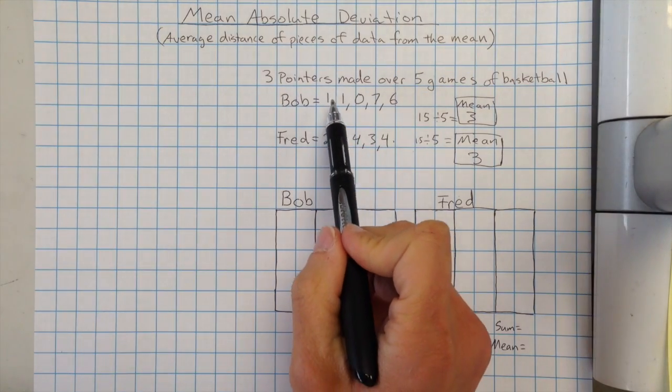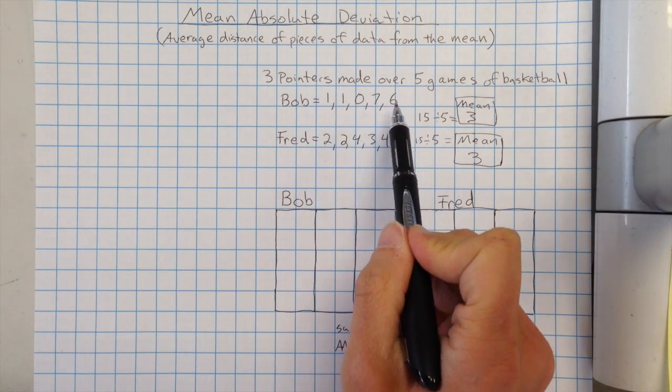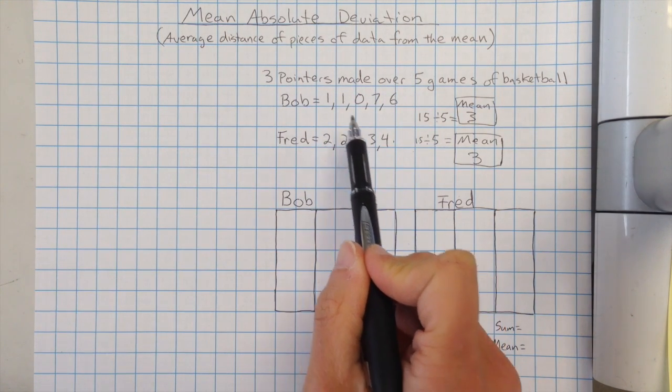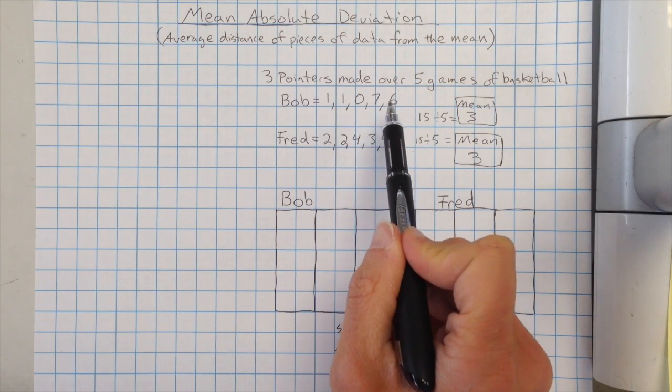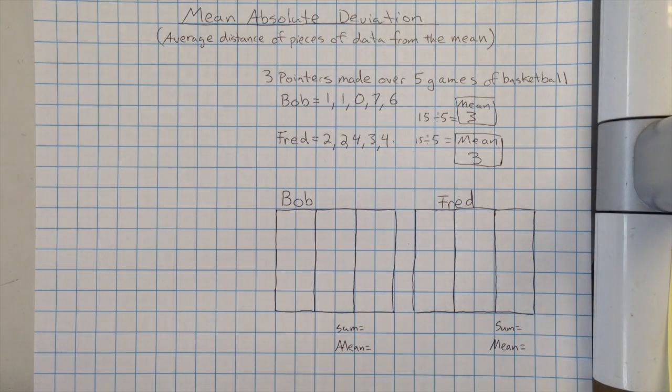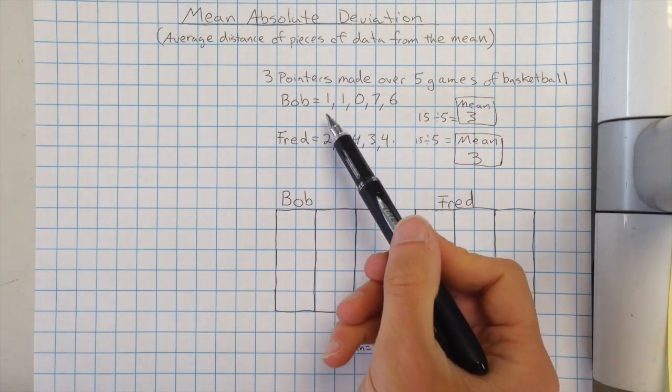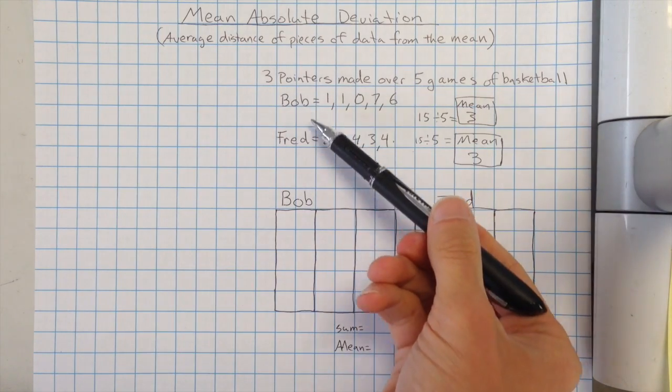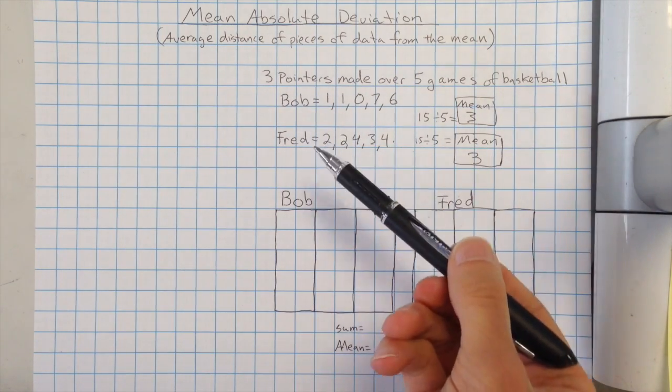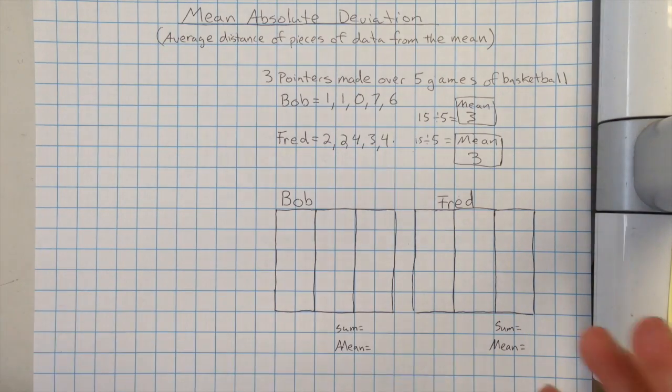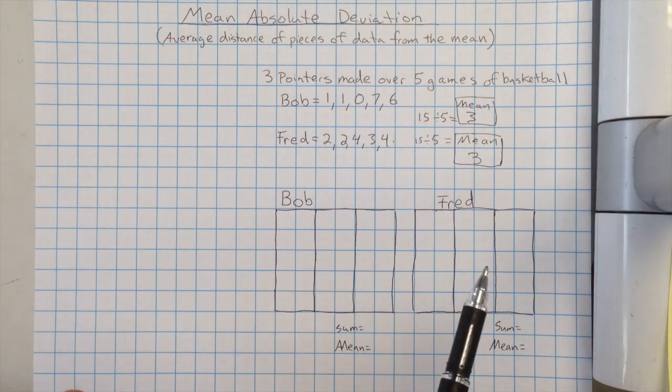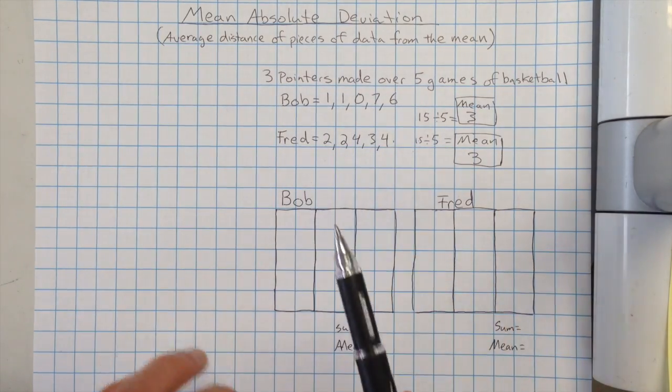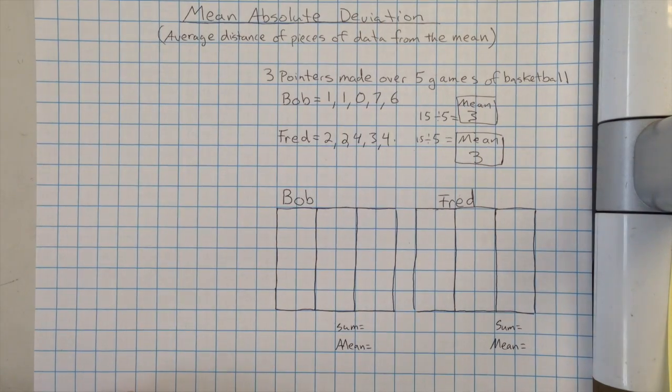But actually, if we look at it, we can see the number of three-pointers they made is actually very different. Right, so Fred is always very close to three, whereas Bob was either way under or way over. So what we use is we use something called the mean absolute deviation to describe how they're actually different from each other. Even though they have the same mean, these two players have very different averages in terms of if we look at their range. And it might determine even, let's say you wanted to pick one for your team, you might be more inclined to choose this guy who's more consistent.